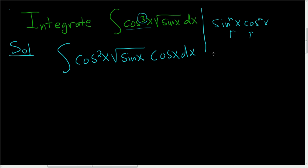Once you do that, u will be the other trig function. So in our case, u is going to be sine x, right? Because we saved a cosine, so u is sine x.